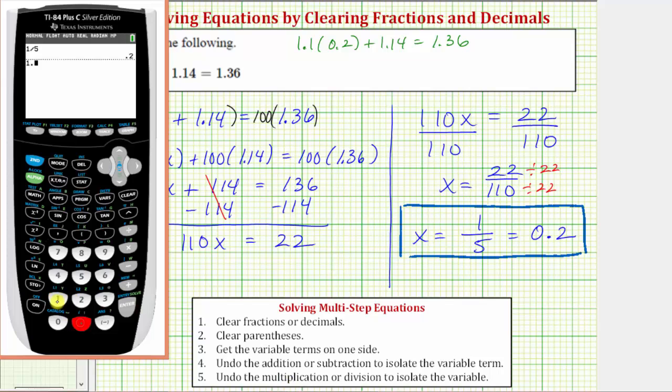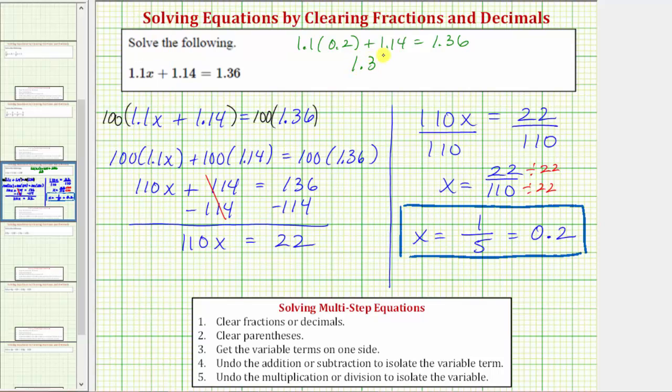So we have 1.1 times 0.2 plus 1.14. Notice we do get 1.36. Because 1.36 equals 1.36, this verifies our solution is correct. I hope you found this helpful.